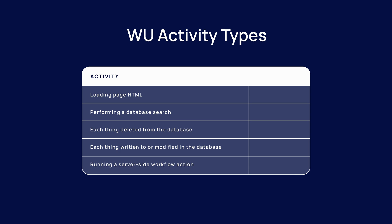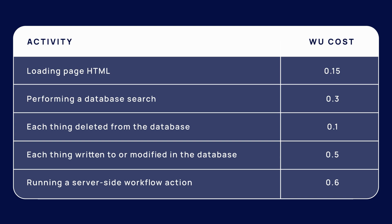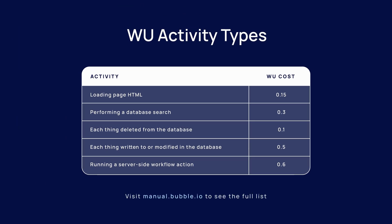Each activity type comes with a starting cost of workload units that builds the foundation for the total calculation. For example, the starting cost of performing a database search is 0.3 workload units, and the cost of deleting a thing from the database is 0.1 workload units. You can find the full list of activities and their respective costs in the manual.